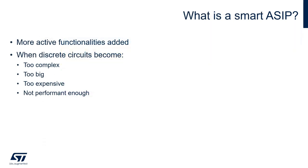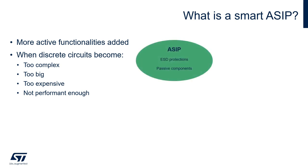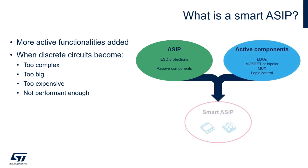If a more intelligent function needs to be developed, ST also has a technology called smart ASIP. It consists in using the same building blocks as a standard ASIP, with the possibility to add more active components such as LDOs, transistors, multiplexers, or logic control. When discrete solutions become too complex, too big, too expensive, or simply not performant enough, the smart ASIP can be the go-to technology.